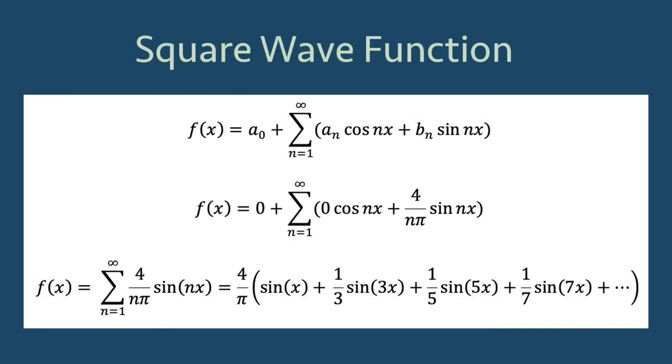Using the theorem, we can find that the coefficients will be a0 = 0, an = 0, and bn = 4/(nπ) if n is an odd integer, and bn = 0 if n is an even integer.